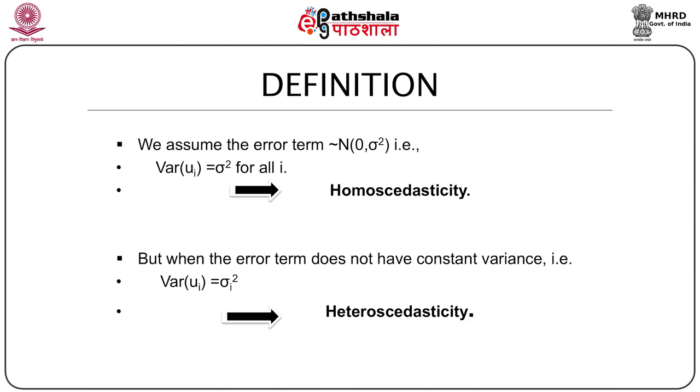When the variance differs across observations, taking value sigma_i square for each i, we call it heteroscedastic.